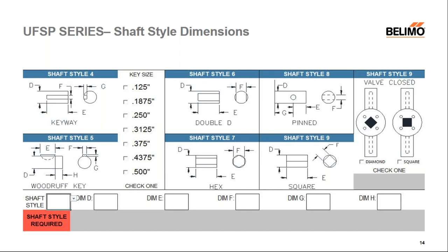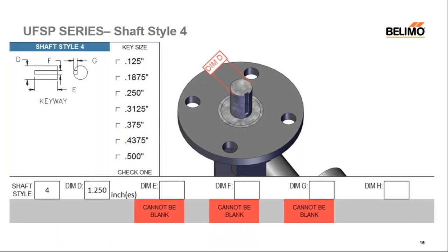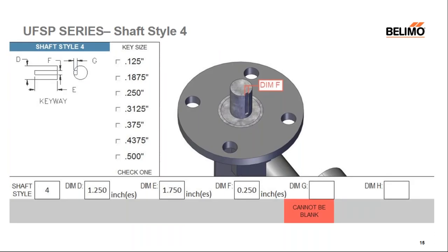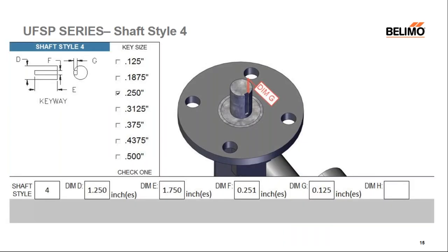The next major section of the UFSP form is shaft style dimensions. Shaft style four is a key way. Once four is picked, required fields are shown in red. Dimension D is the diameter of the shaft, dimension E is the length of the key way, and dimension F is the width of the key way. Dimension F can also be filled in by checking a standard key size box, or both methods can be used if a measured value is very close to a standard size. Dimension G is the depth of the key.